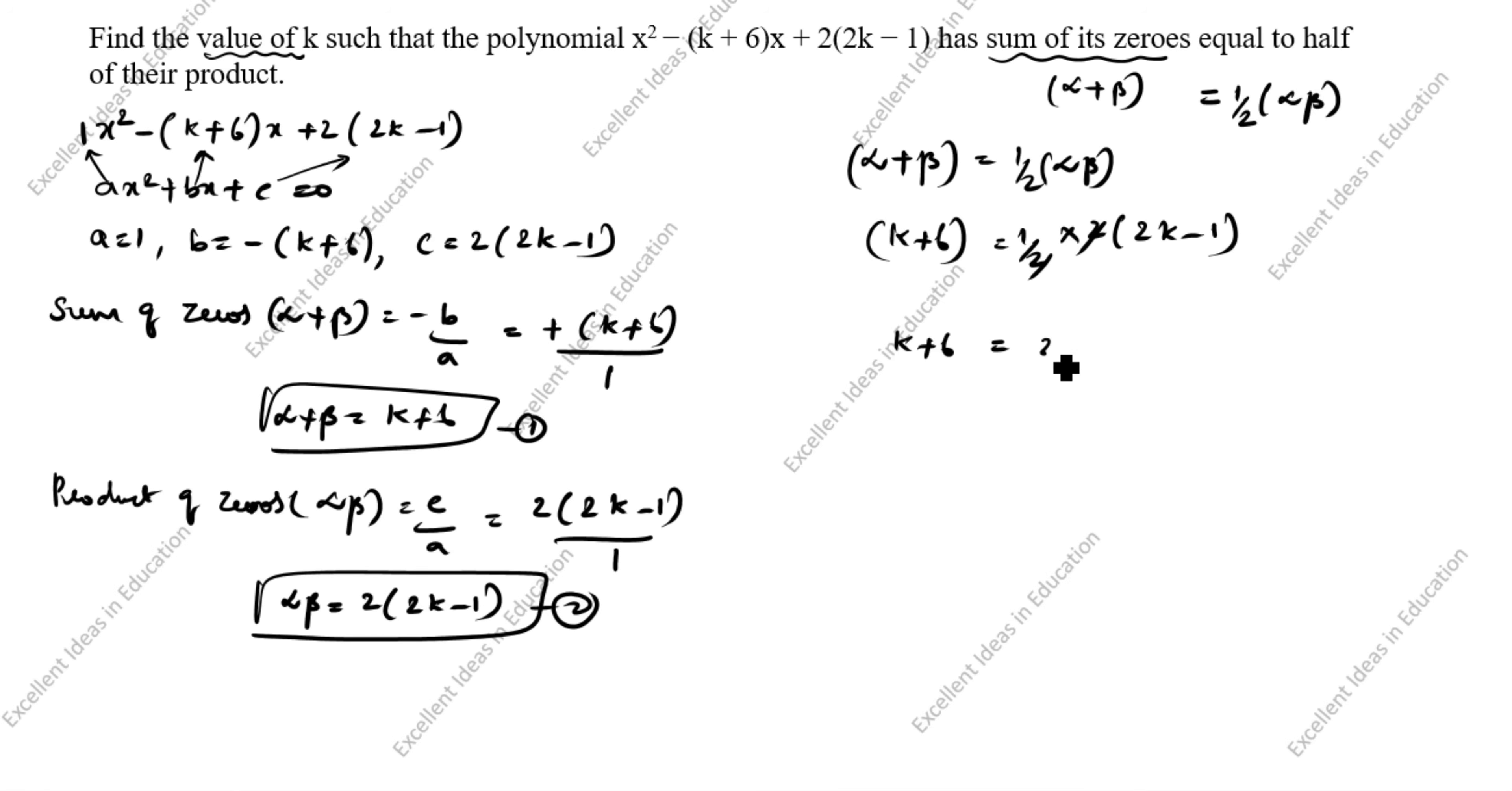k + 6 = 2k - 1. Bringing k to one side and numbers to another side: 6, this minus 1 bring it to this side plus 1, equals 2k. This plus k goes to this side as minus k. 7 = 2k - k, so 7 = k. The value of k equals 7 is the answer. Thanks for watching.